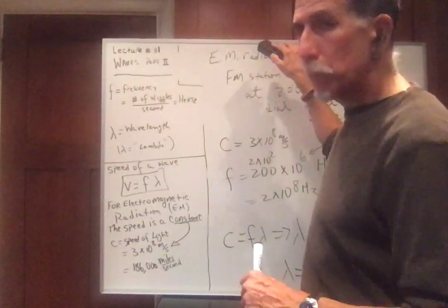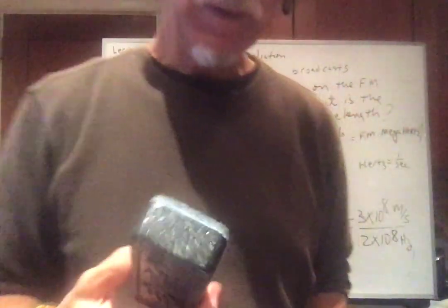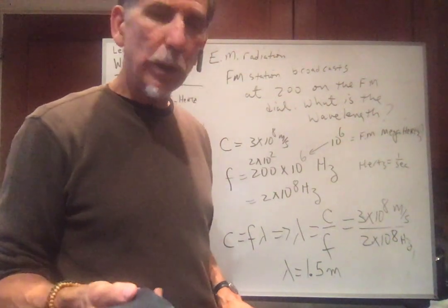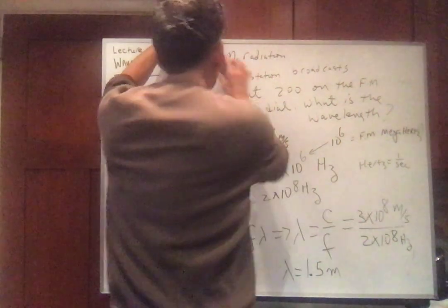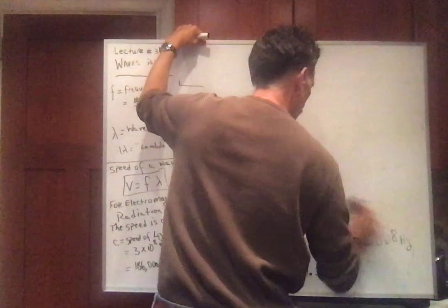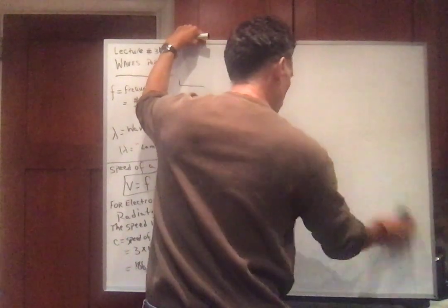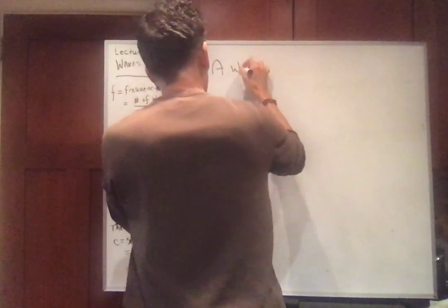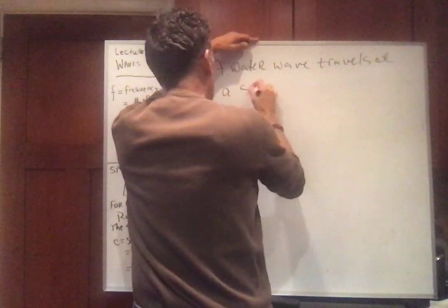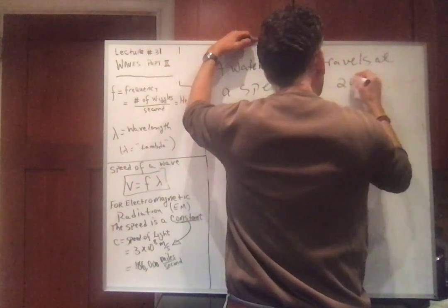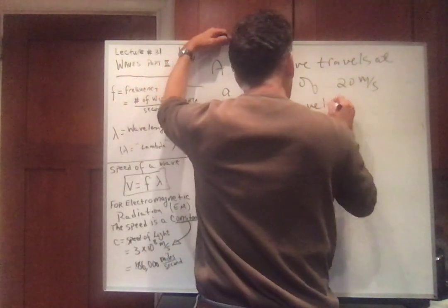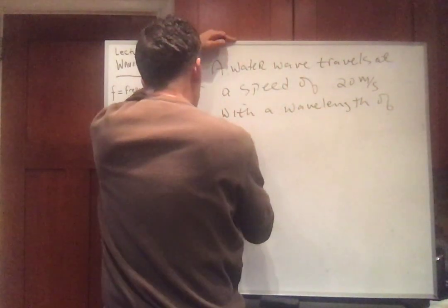So all problems with electromagnetic radiation, if I tell you it's FM, then it's mega, 10 to the 6th. If I tell you it's AM, it's 10 to the 3rd. If it's electromagnetic radiation, I'm telling you the speed is the speed of light. But I could give you any other problem. I'll make a very simple problem. A water wave travels at a speed of 20 meters per second. Pretty fast, huh? With a wavelength of 500 centimeters.